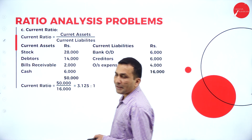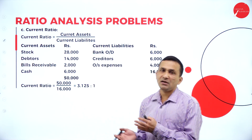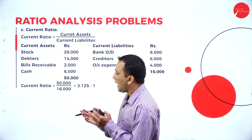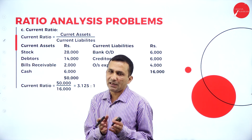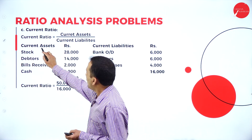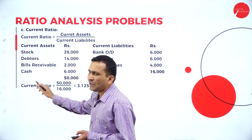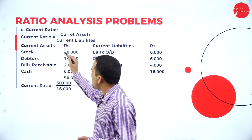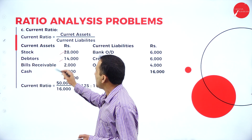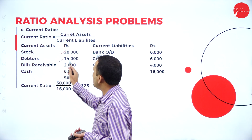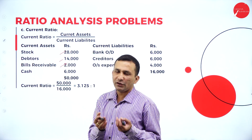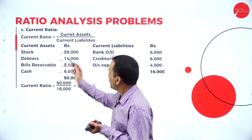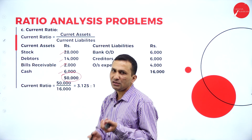Moving to the current ratio with the help of the balance sheet. On the asset side, current assets: stock is 28,000, debtors 14,000, bills receivable 2,000, and cash 6,000. Adding together, we are getting 50,000.